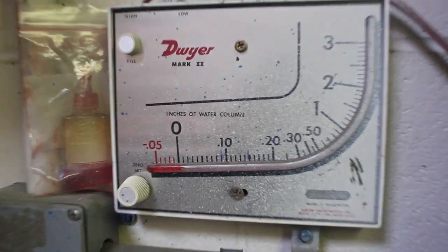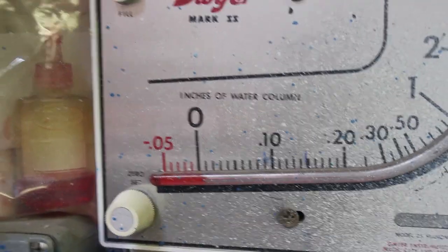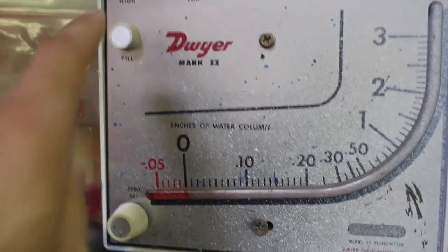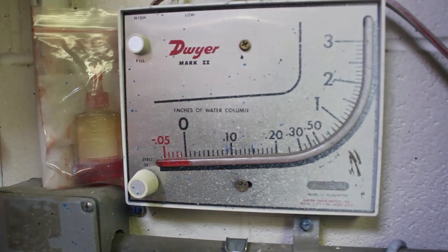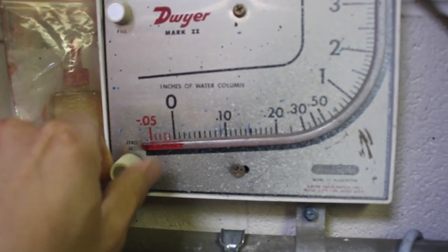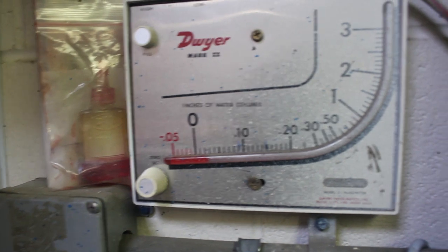To calibrate the manometer, you first have to ensure that there's gauge oil in the manometer. There's a fill port here and then the adjustment knob here. When you fill the gauge, it's always good to keep this relatively turned in to start so that you don't overfill it.